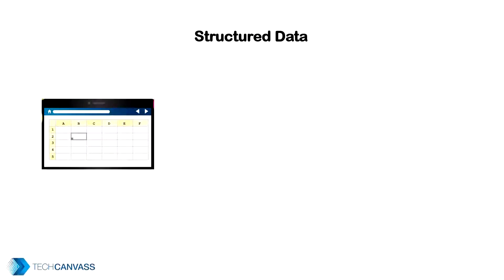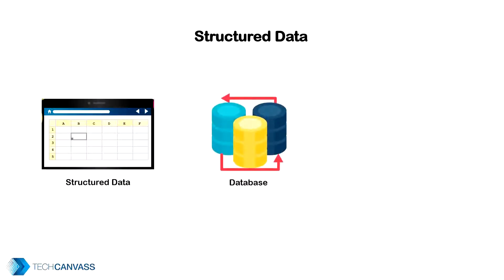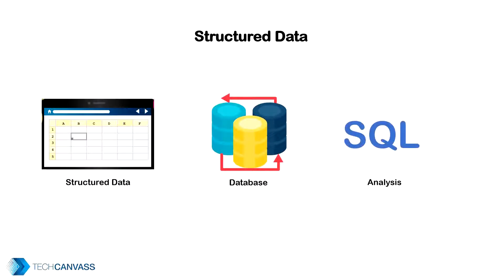Structured data is very organized and it fits nicely into rows and columns, like data in Excel. Think of a sales database where the customer, product, and cost information is stored, each row containing one unique purchase. It has a fixed format and is generally stored in a database. It can be easily analyzed using SQL, that is Structured Query Language, where we write queries to analyze the data.